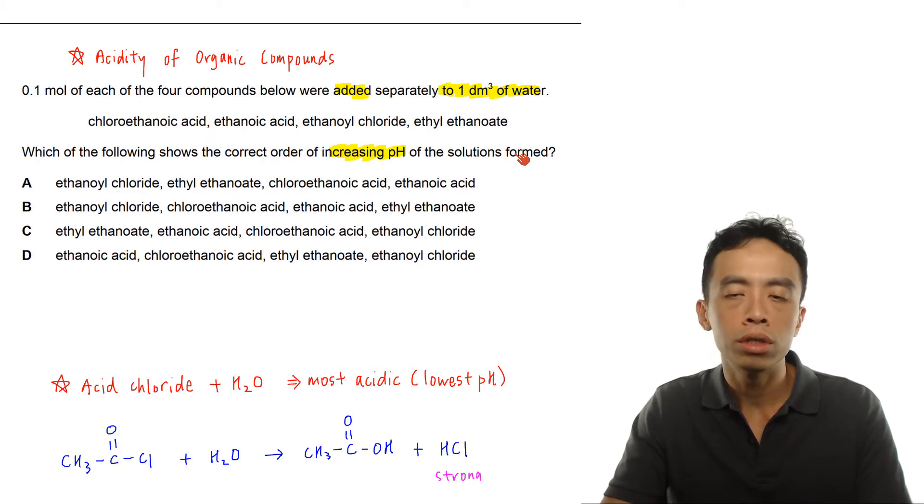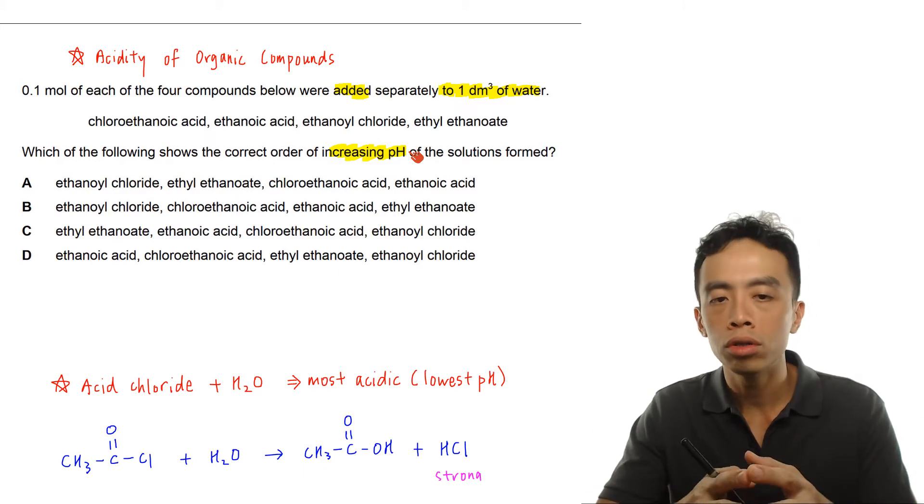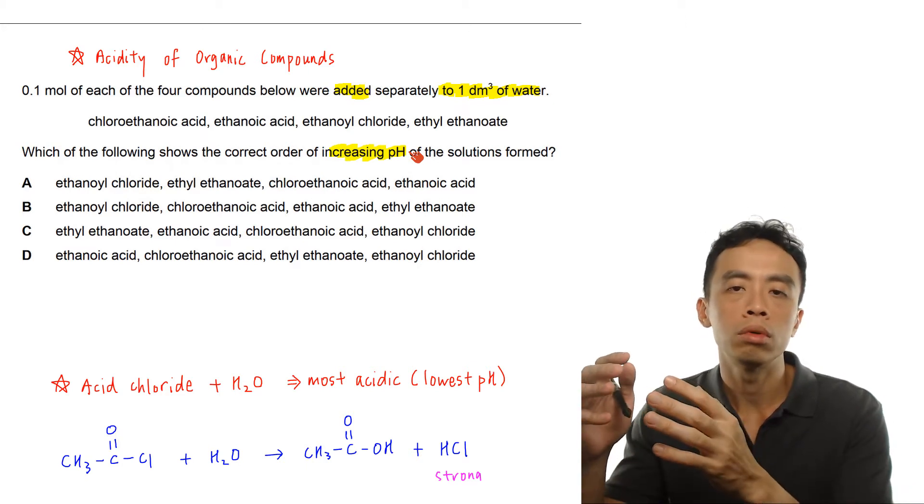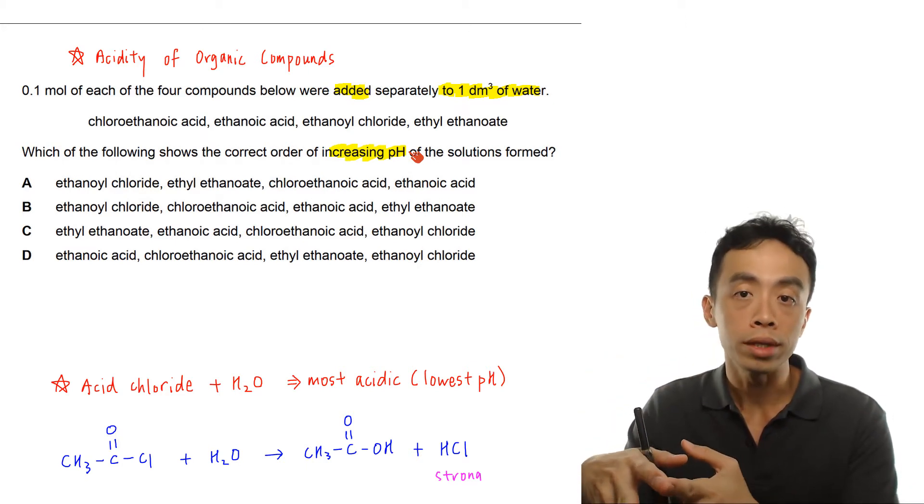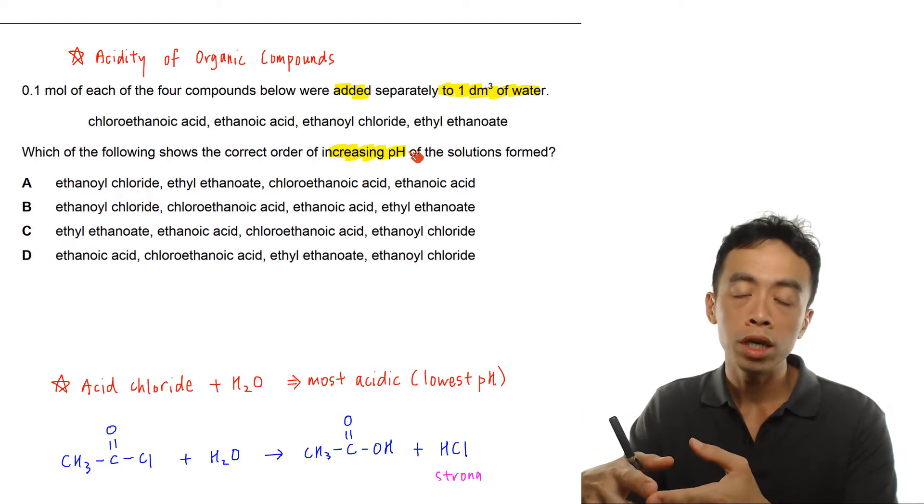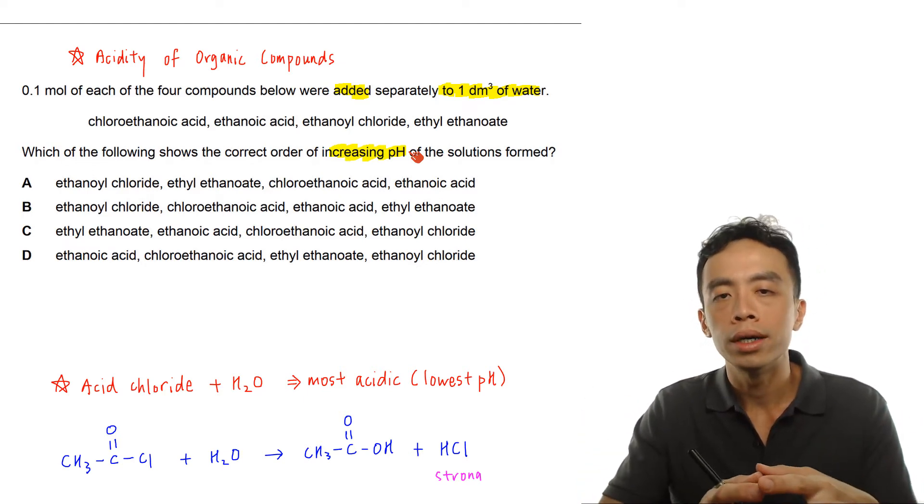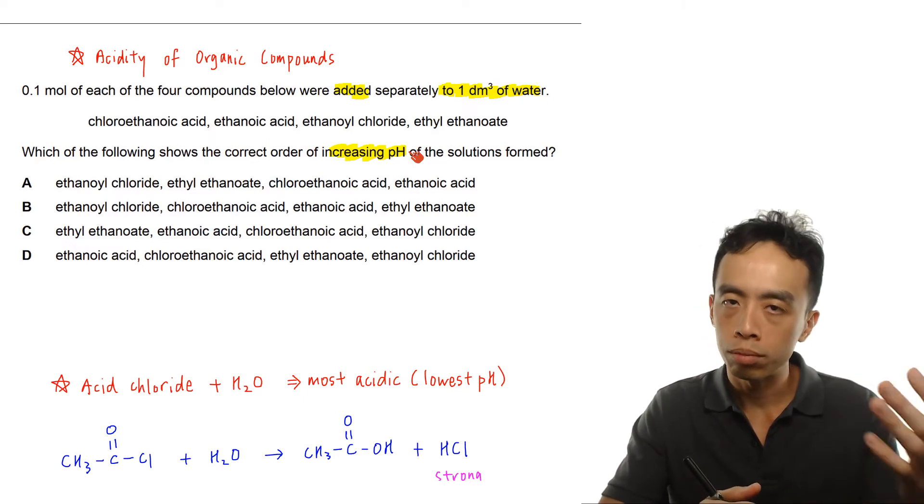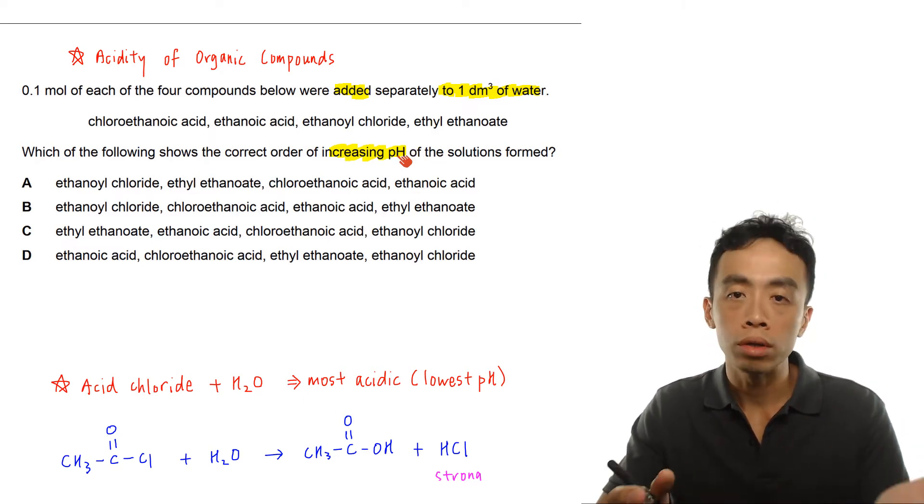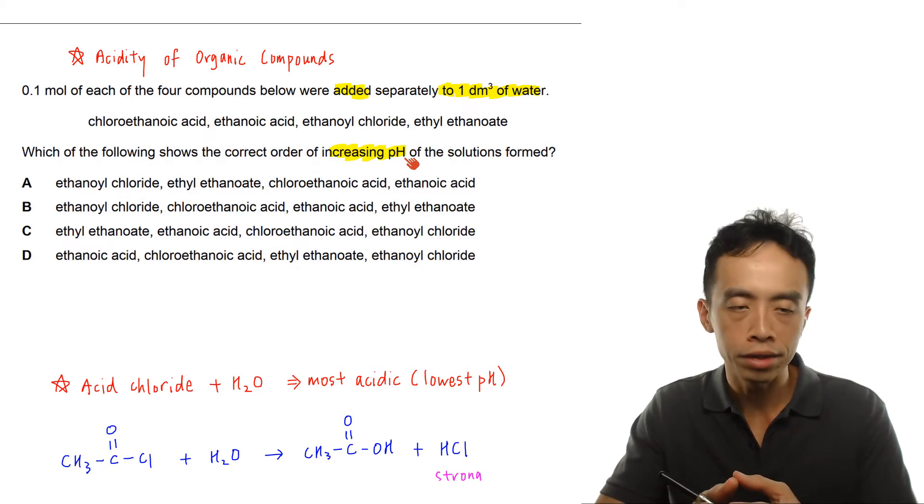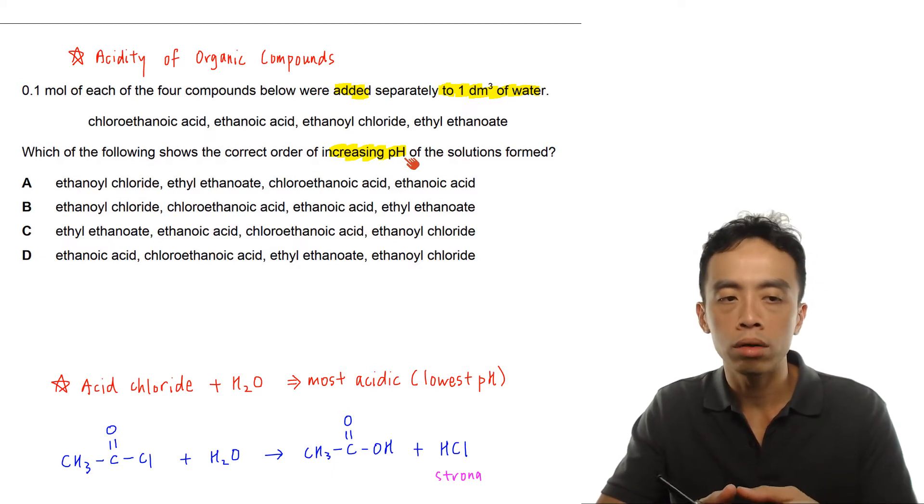Which of the following shows the correct order of increasing pH of the solutions formed? Increasing pH means from low pH to high pH, which means we want to rank them in order of decreasing acidity. The first one will be the most acidic which gives the lowest pH, and the one on the extreme right will be the least acidic with the highest pH.